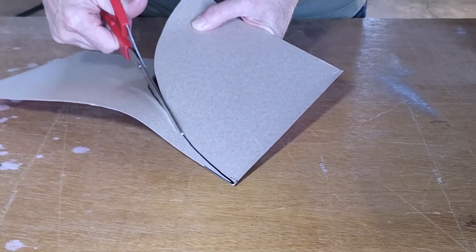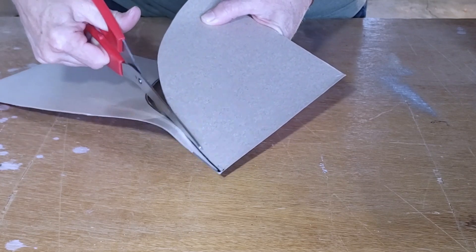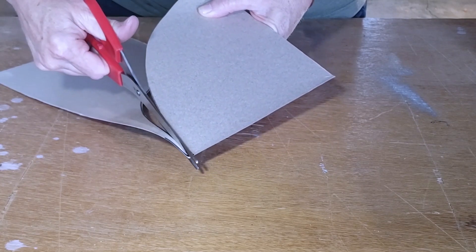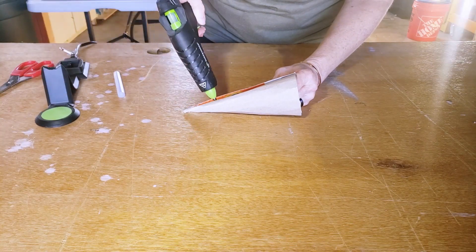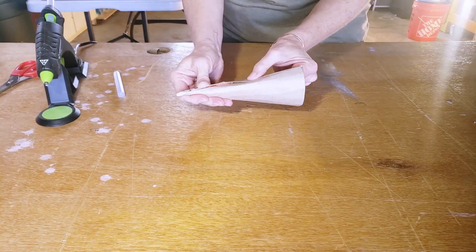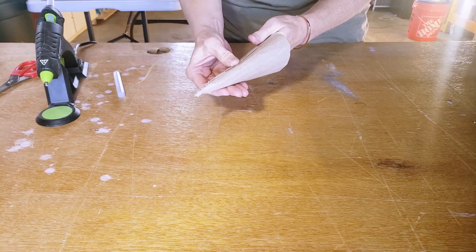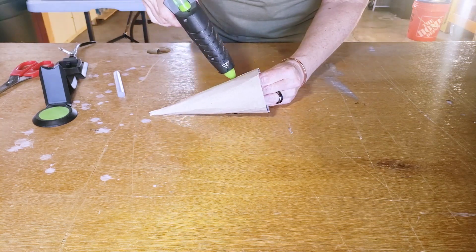And then once the shape was cut out I applied some hot glue to make it into the cone shape. Now this cardboard is a little stiff and doesn't want to roll very easily but with a little determination it can be shaped into a cone and you don't have to worry if the shape isn't perfectly smooth.